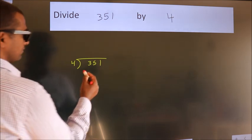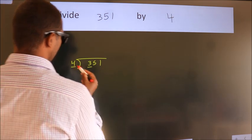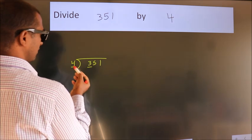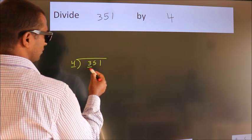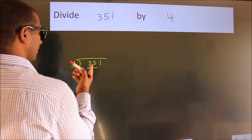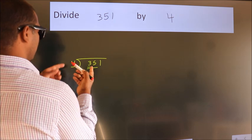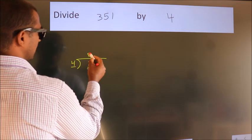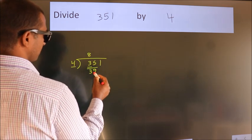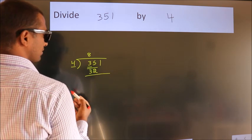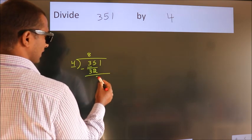Next, here we have 3, here 4. 3 is smaller than 4, so we should take 2 numbers: 35. A number close to 35 in the 4 table is 4 times 8, 32. Now we subtract. We get 3.